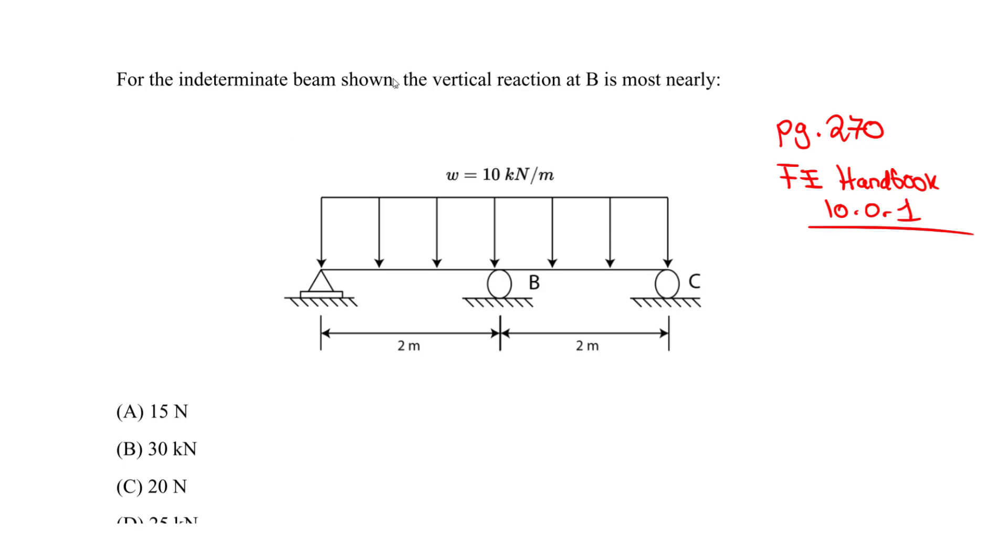We want to focus on this indeterminate beam. For the indeterminate beam shown, the vertical reaction at B is most nearly what? We know that we are indeed indeterminate. At the pin, we have how many reactions? This is A, this is B, this is C. We have AY here, AX here, BY here, and CY here. So we have how many reactions? Four.